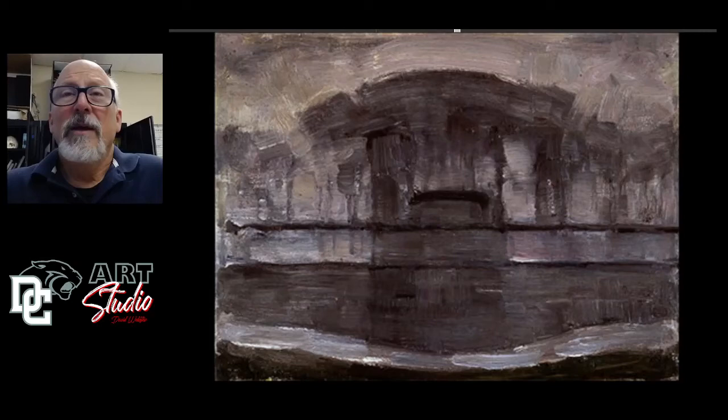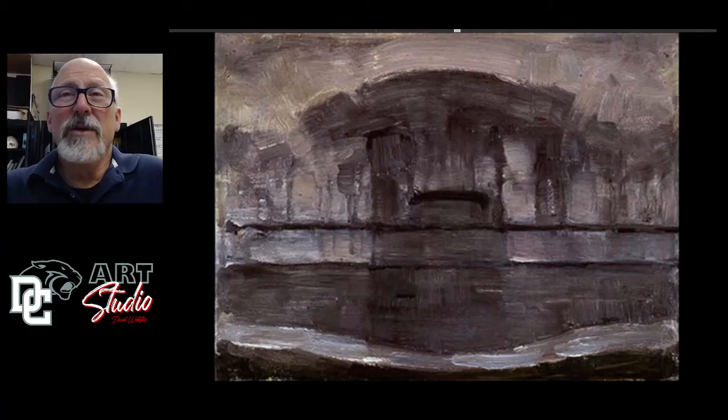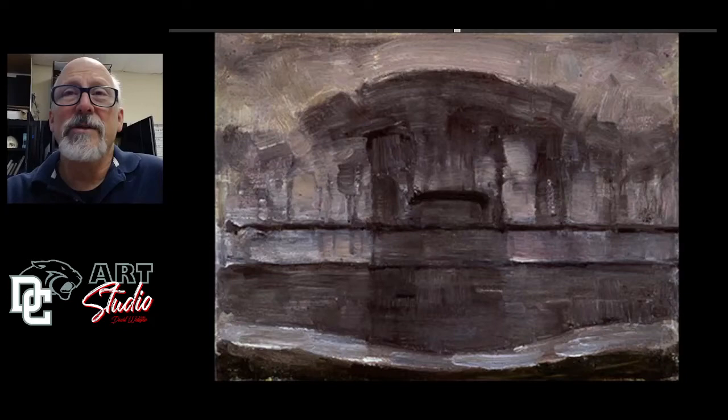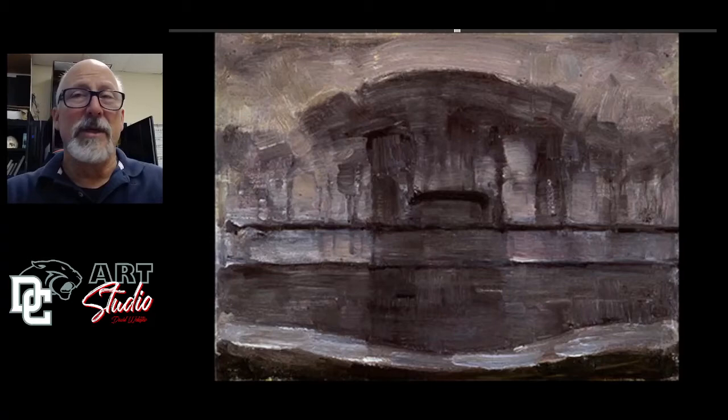Then he moves further towards abstraction — the shapes in this particular painting almost get lost. He's got light and dark spaces, but the sense that he's doing something representational starts to become less apparent. He's looking more at the structure. You have these linear movements and shapes, but the shapes are more abstract and less about representing forms in nature.